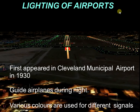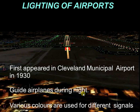The lighting of airports first appeared at the Cleveland Municipal Airport in 1930. This was the first airport to use lighting, designed to guide airplanes during the night.